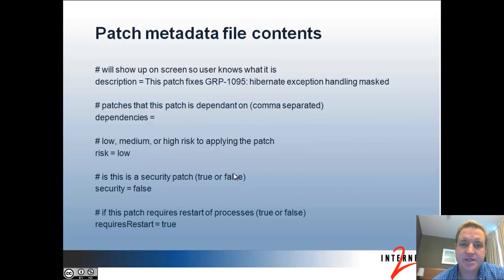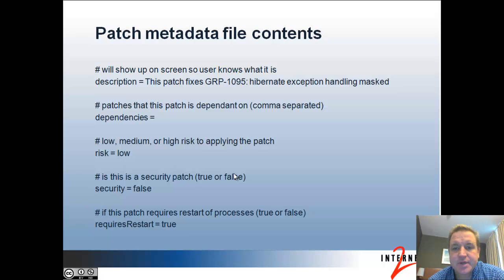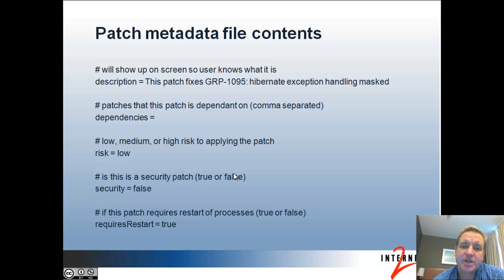The patch metadata file looks like this — basically it's a properties file. There are some comments, and then there's a description of the patch, which usually mentions the JIRA ticket ID and the summary from JIRA. Patches can be dependent on other patches. This would happen if files that other patches change also need to be changed by this patch, and the patching system can make sure that you've applied the other patches, since you can pick which patches you want to apply.